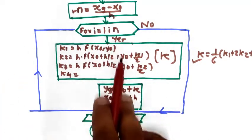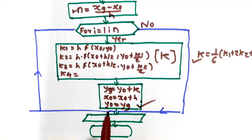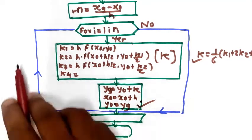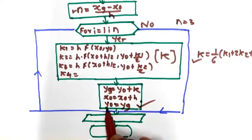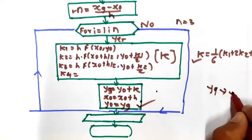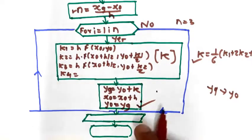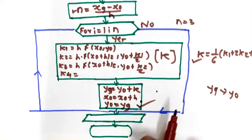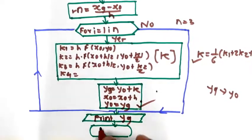Go for the next iteration — second, third, and so on — finding the value of k at each step. At last, you will get the value of yg. For each subsequent iteration, replace y0 with yg: after the first iteration, the yg value becomes the initial value for the second iteration. Suppose n equals 3; after completing all n iterations, you get the final yg. Then print yg, and the flowchart ends.